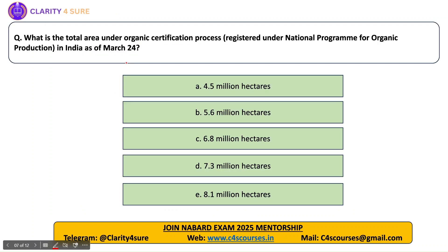Next question: what is the total area under the organic certification process registered under NPOP in India as of March 2024? The total area under organic certification is 7.3 million hectares. This area includes both wild area and cultivable area.